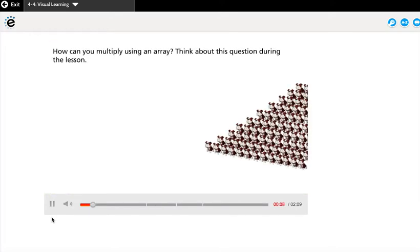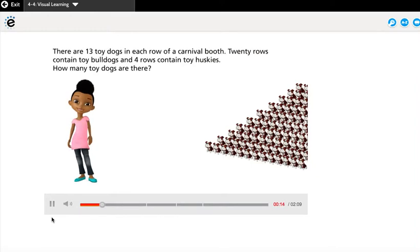How can you multiply using an array? Think about this question during the lesson. There are 13 toy dogs in each row of a carnival booth. 20 rows contain toy bulldogs and 4 rows contain toy huskies. How many toy dogs are there?